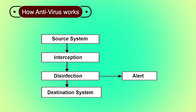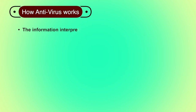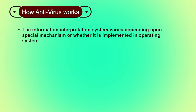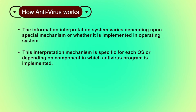This block diagram represents the working of antivirus software. Information starts from a source system and must reach the destination system. The source could be a floppy disk, hard drive, etc., and the destination could be the hard drive of a computer or an ISP that stores and sends messages when a client requires them. The information interpretation system varies depending on the mechanism or whether it is implemented in the operating system. For example, in Windows 8, a virtual driver is used to monitor disk activity — every time information is accessed through a floppy disk or hard drive, the antivirus program intercepts read and write calls to the disk and scans the information so it can be read safely.